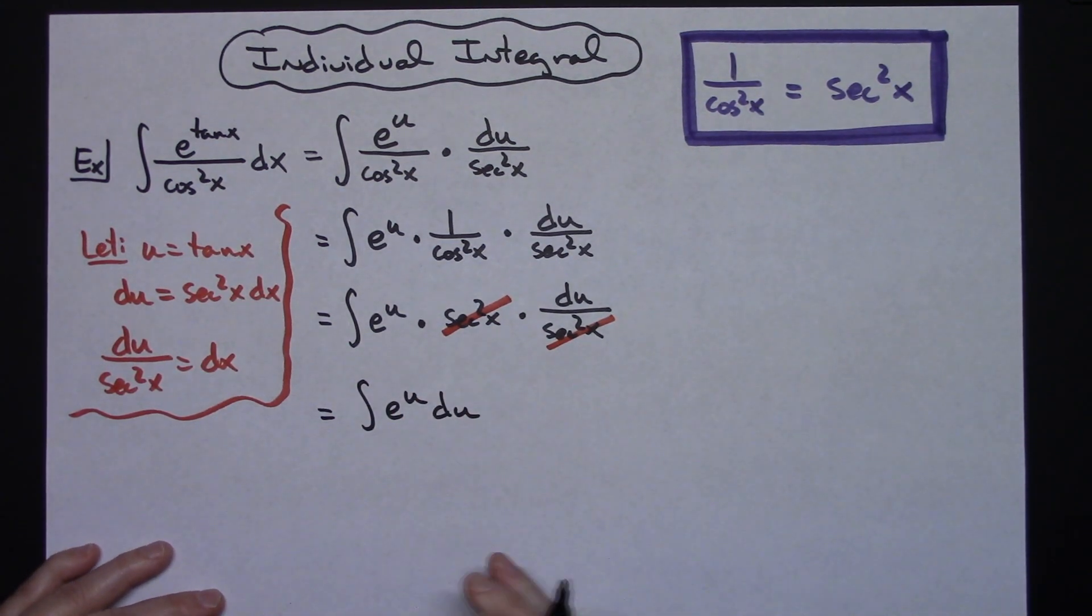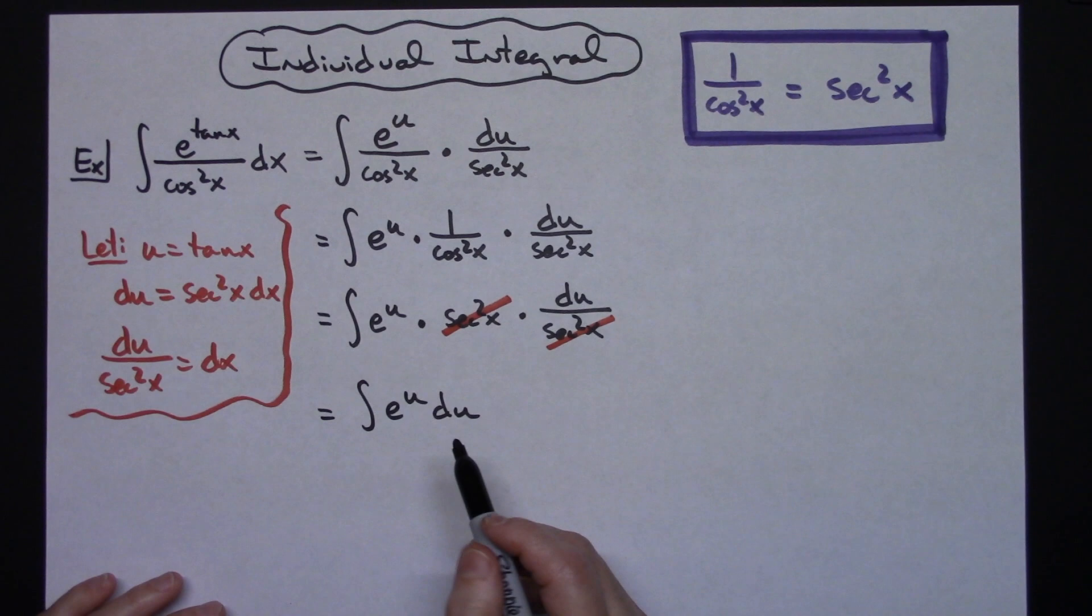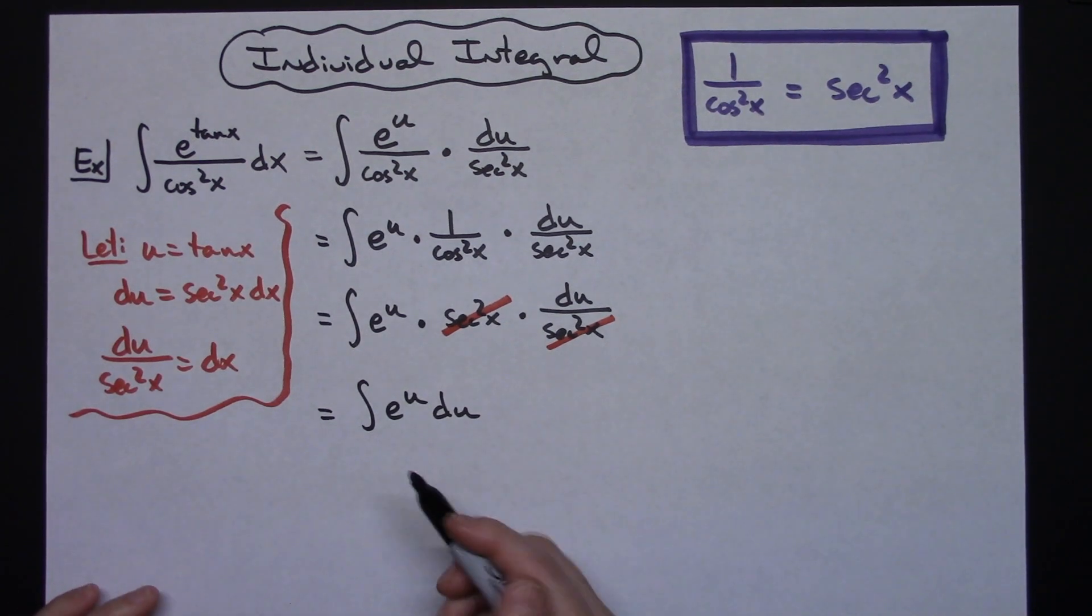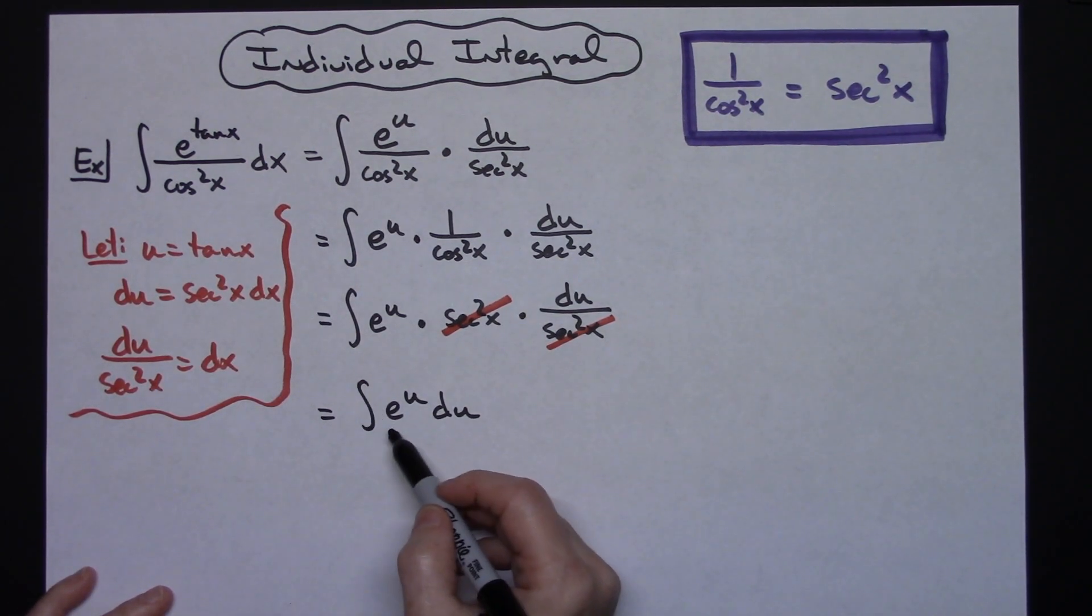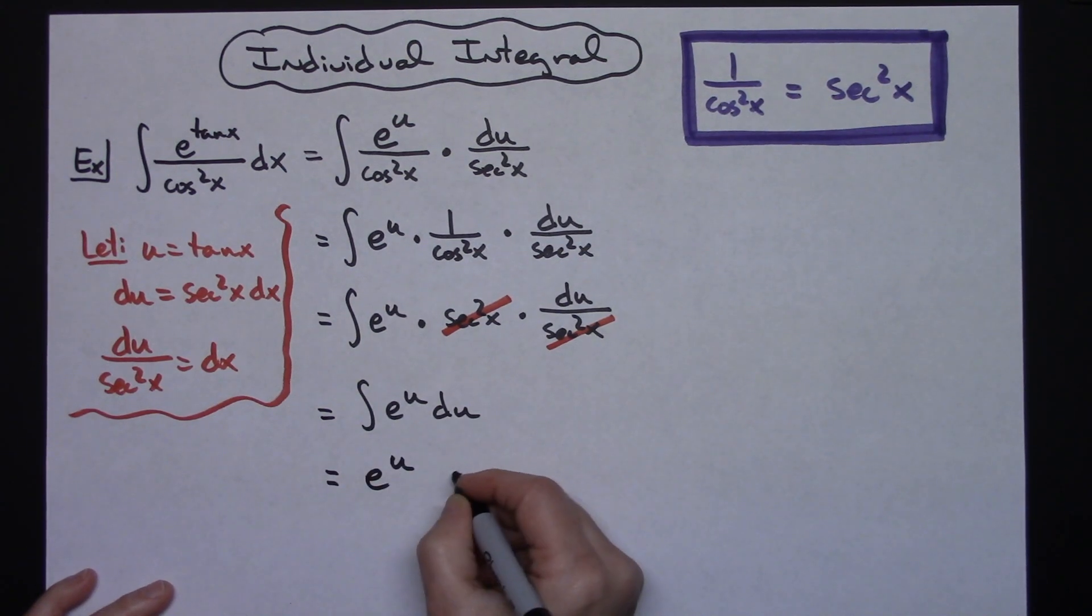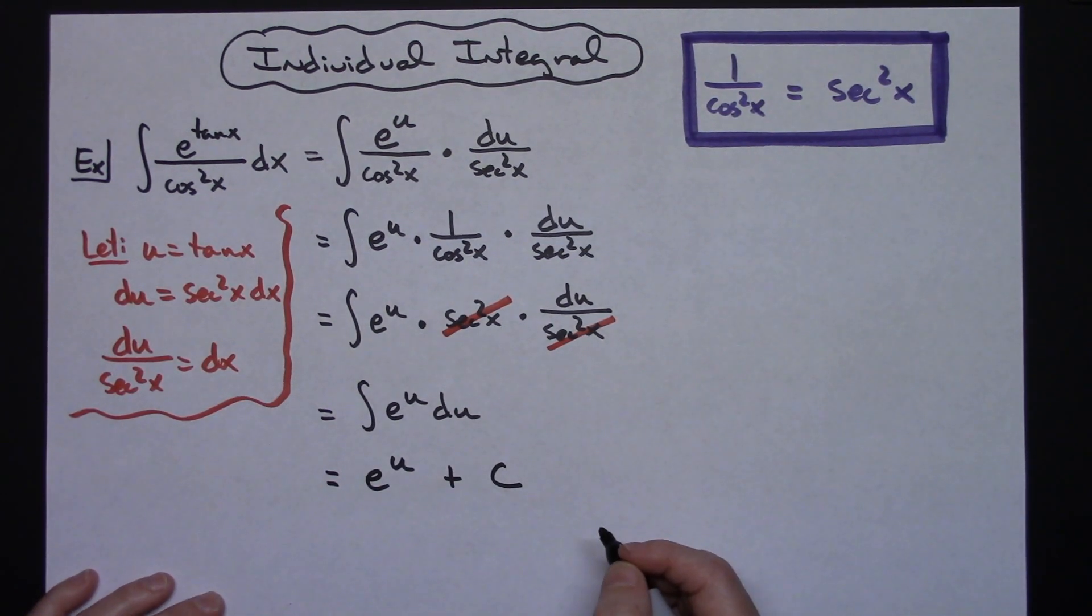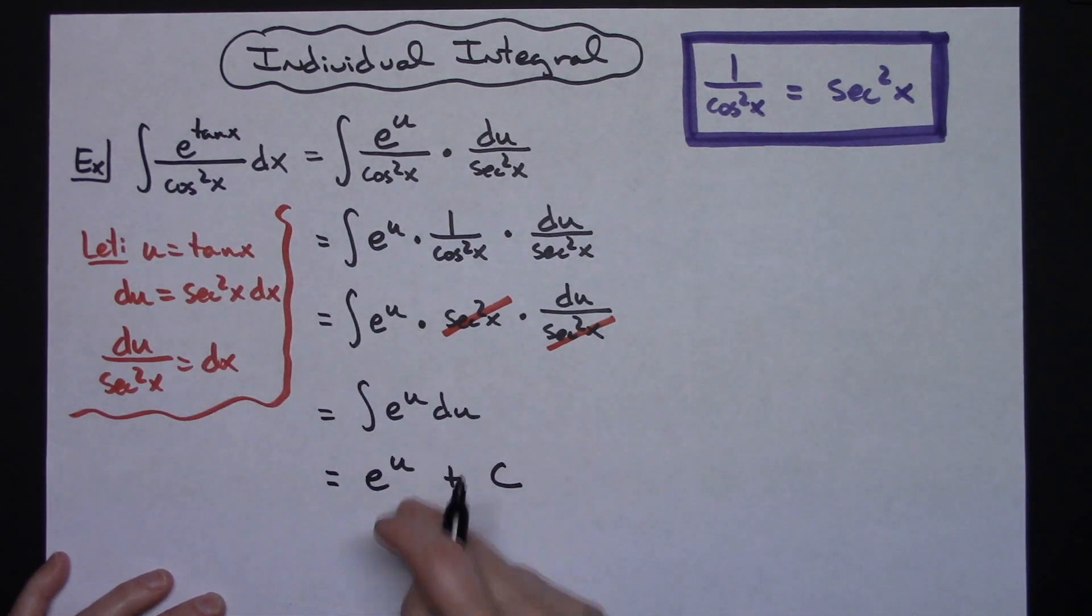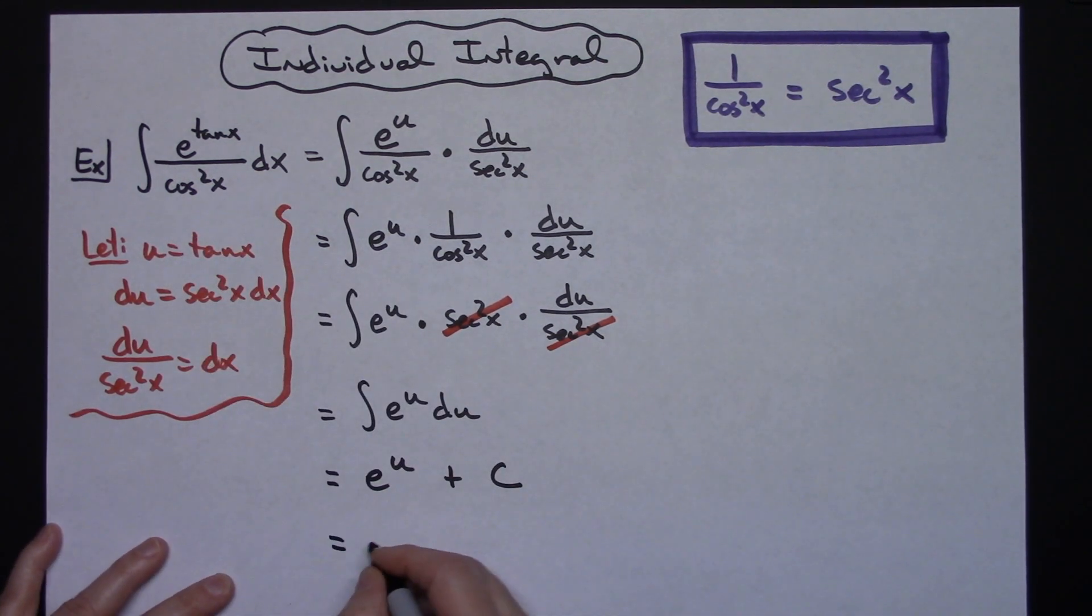So that's what we needed to do. We needed to get down to a place where we could actually integrate this. If you are working integrals like this with u substitution, you should have memorized the integral of e to the u is e to the u. So I'll have e to the u and I can add that plus C because I've integrated. Last step would be to substitute that u back in. So I'll have e raised to the tangent x plus C.